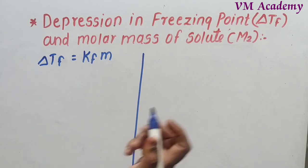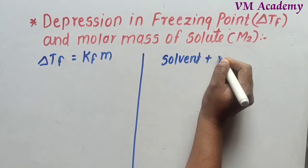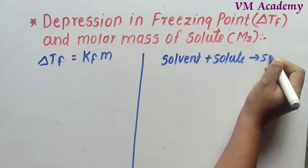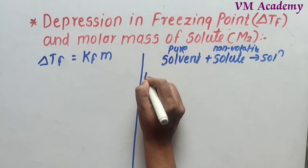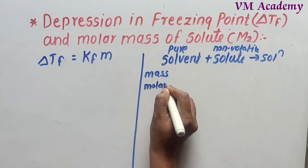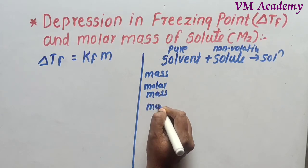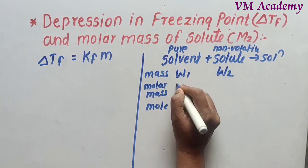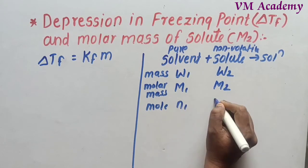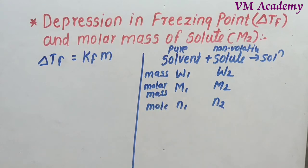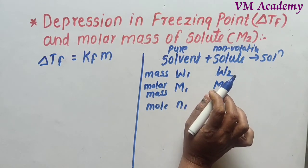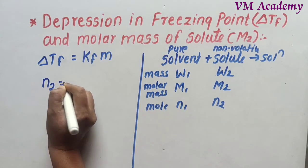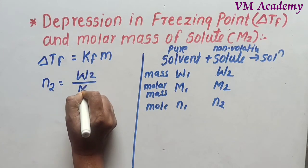When solvent plus solute are added together, solution is formed. In this condition the solvent is pure and the solute is non-volatile. We assign: W1 = mass of solvent, W2 = mass of solute, M1 = molar mass of solvent, M2 = molar mass of solute, N1 = moles of solvent, N2 = moles of solute. The solute is always labeled second and the solvent is always labeled one.